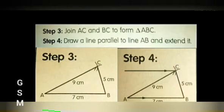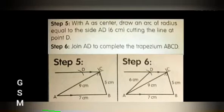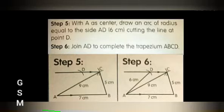Step 3: Join AC and BC to form triangle ABC. Step 4: Draw a line parallel to line AB and extend it. Step 5: With A as center, draw an arc of radius equal to side AD, 6 cm, cutting the line at point D. Step 6: Join AD to complete the trapezium ABCD.